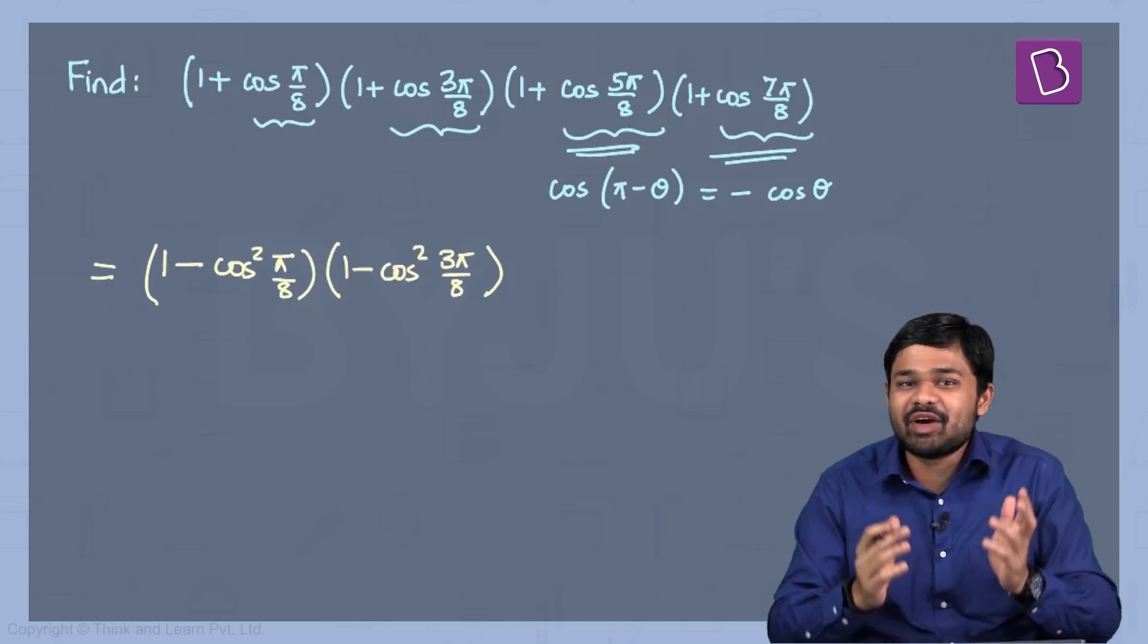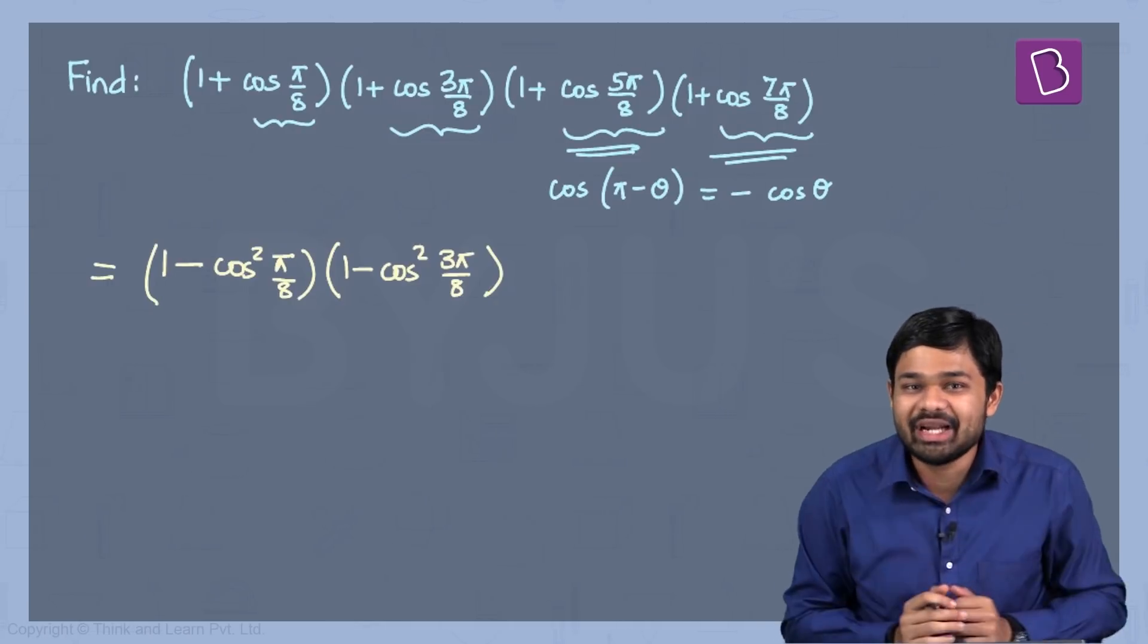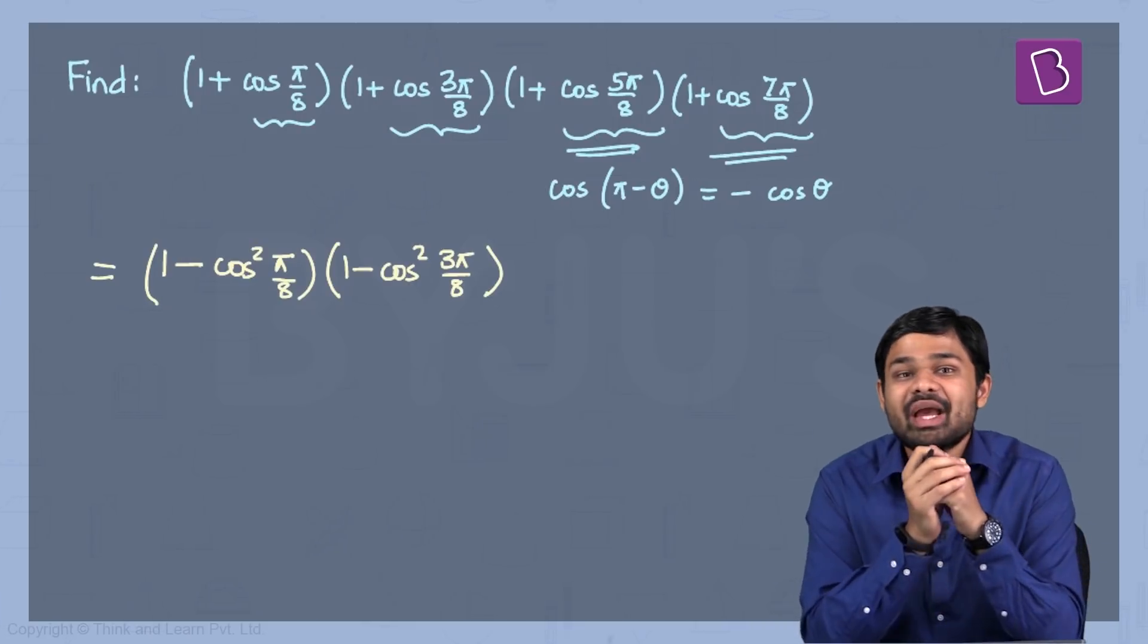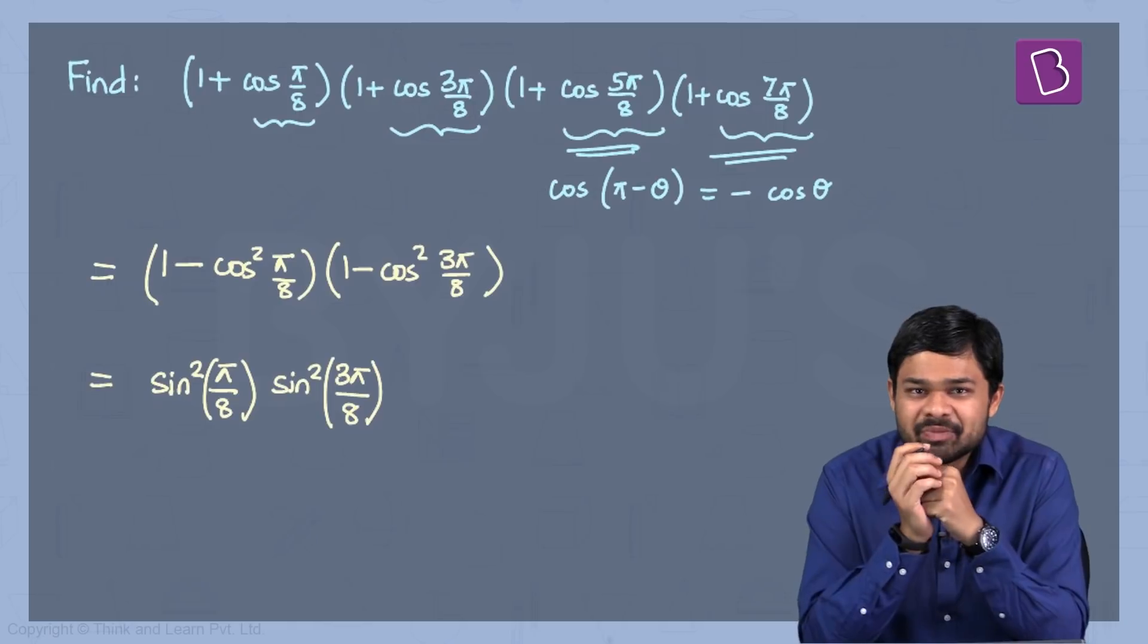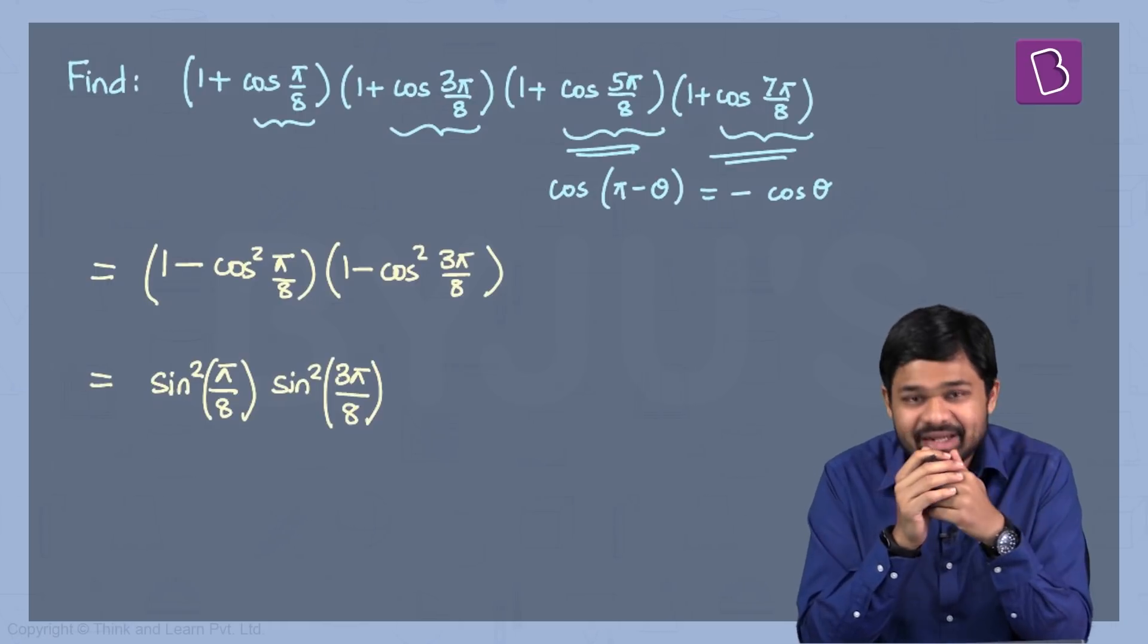From which you can further simplify using 1 - cos²θ = sin²θ formula, and finally I have an expression in terms of sine squares. Now I have sin²(π/8) and sin²(3π/8).